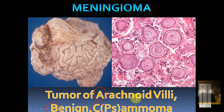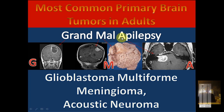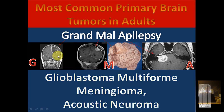Acoustic neuroma is a schwannoma — a tumor of the eighth nerve. It is present in the cerebellopontine angle, and since it's a tumor of the eighth nerve, symptoms relate to that nerve: tinnitus and hearing loss. To summarize adults — GMA: Glioblastoma in one hemisphere with pseudopalisading cells; Meningioma on convexities or parasagitally with psammoma bodies and slow-growing benign features; and Acoustic neuroma.